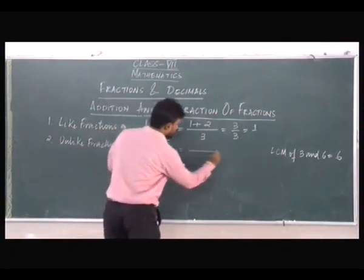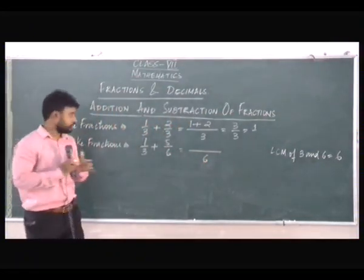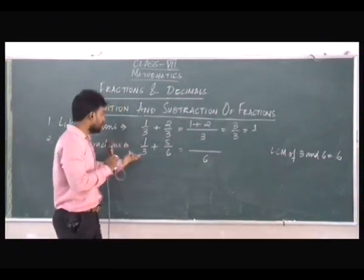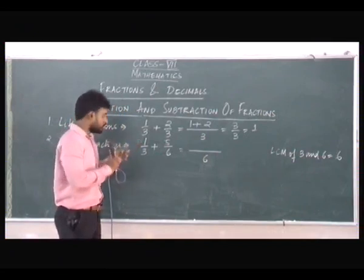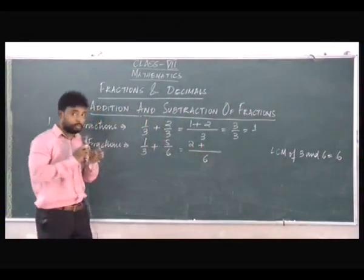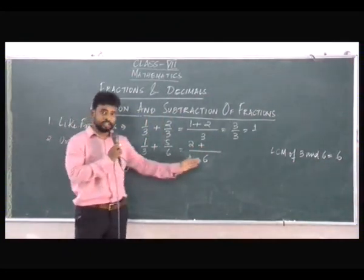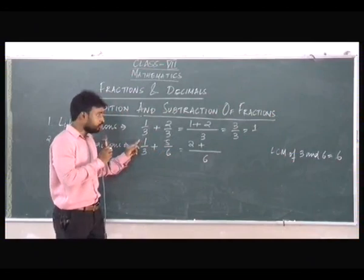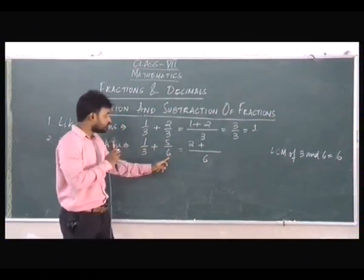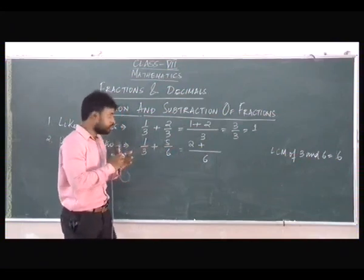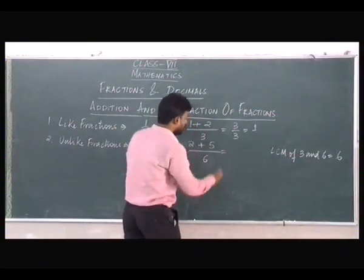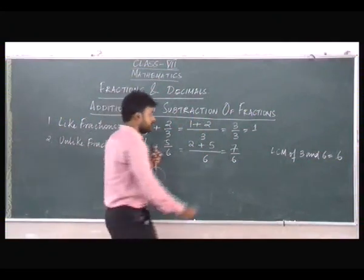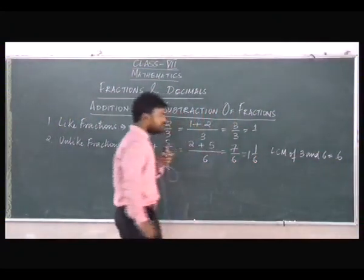So we'll take 6 as the common denominator. We see how many times 3 goes into 6 — 3 goes 2 times in 6, so we multiply the numerator 1 by 2, giving us 2. Then 6 goes 1 time in 6, so we multiply 5 by 1, giving us 5. So ultimately we get 2 plus 5 equals 7 by 6 as the answer, which can be converted into the mixed fraction 1 and 1 by 6.